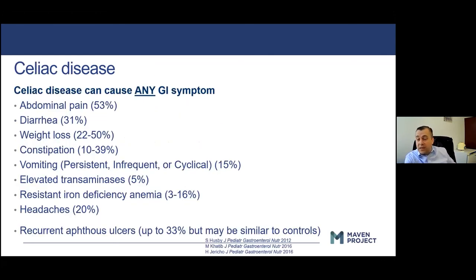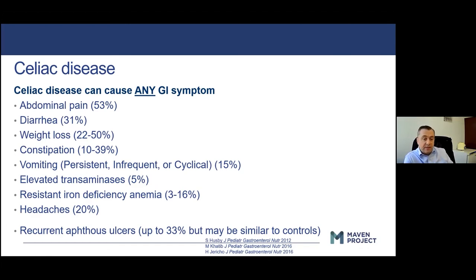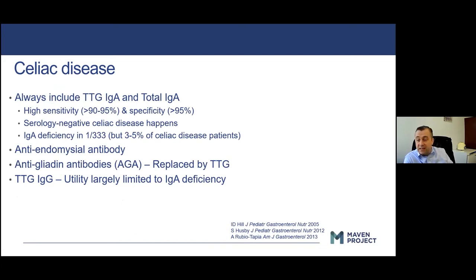Celiac disease — if you're having any GI symptom, it could be celiac disease. We've seen kids graduate high school, head off to college, drop 15 pounds in college, with worries about an eating disorder, and when they describe relatively good intakes, they turn out to have celiac disease. It's hard to come into a GI clinic without someone thinking about sending off a celiac screen, because it really could be any GI symptoms — or even the absence of GI symptoms, but headaches or fatigue — all reasonable reasons to wonder if it could be celiac.